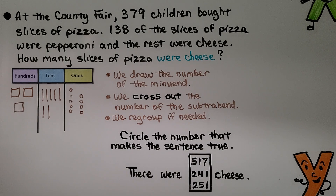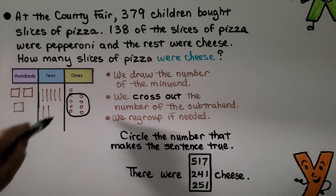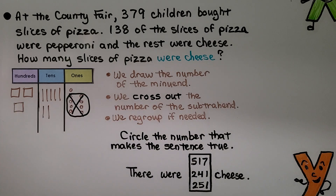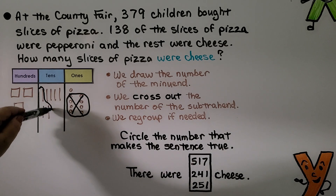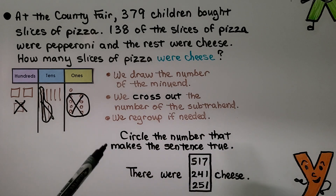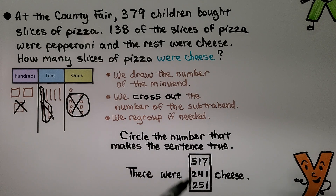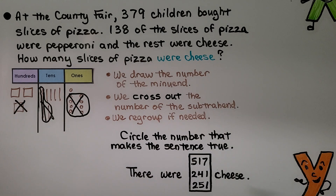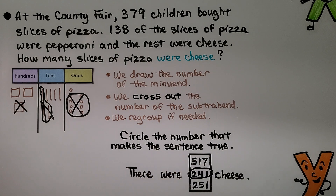If you said yes, you're right — there are 9 of them. We take away 8 ones and cross them off. We need to take away 3 tens, so we cross those off. We need to take away 1 hundred, so we cross that off. We count what's left: 2 hundreds, 4 tens, 1 one. If you said 241, you're right. There were 241 cheese slices.